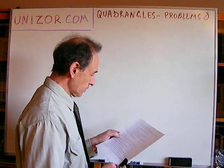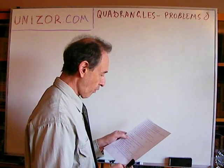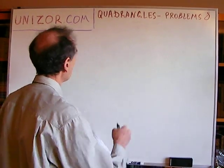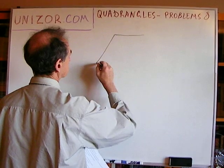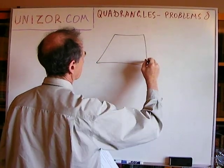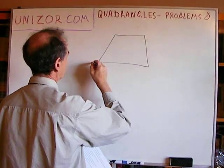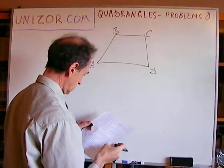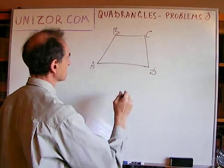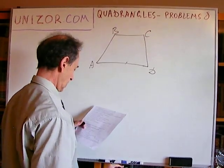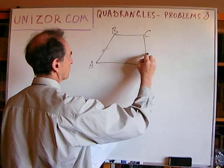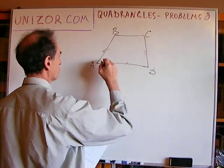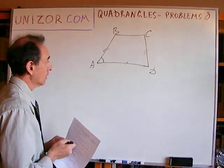Construct a trapezoid by a base, two legs, and one angle formed by that base with one of its legs. So a trapezoid has one base, two legs, and one angle formed by that base.